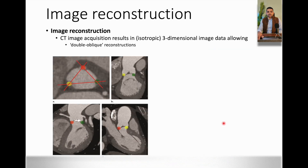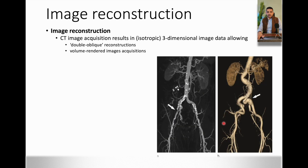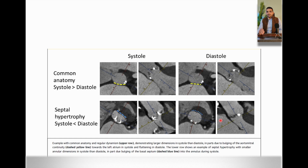Now let's talk about image reconstruction. CT image acquisition results in isotropic — meaning the same point in different views — three-dimensional image data, allowing double oblique reconstruction. You can also get a volume-rendered image acquisition where you can see the calcifications and thoracic structures in a 3D model. An important principle: the systole and diastole of the annulus are different. We do our measurements in systole because it gives a bigger measurement of the annulus.